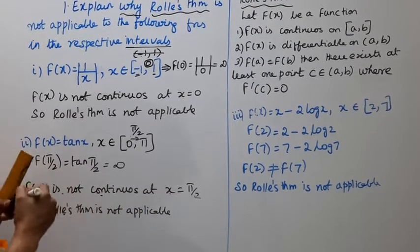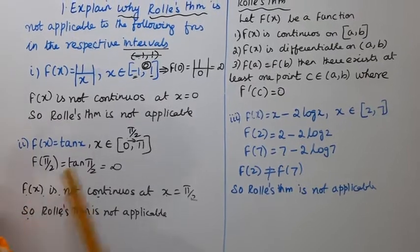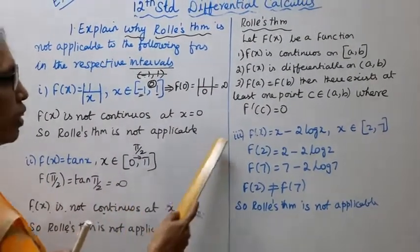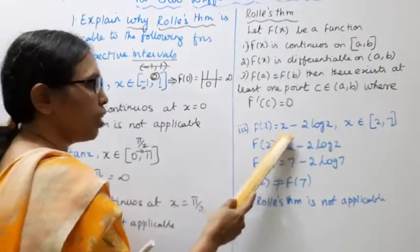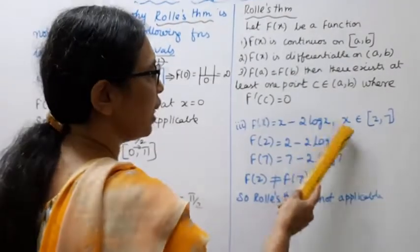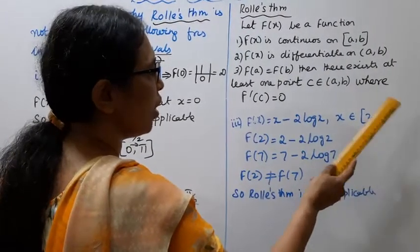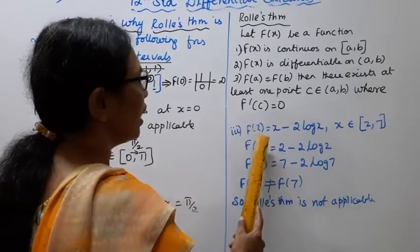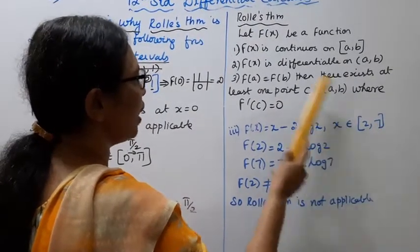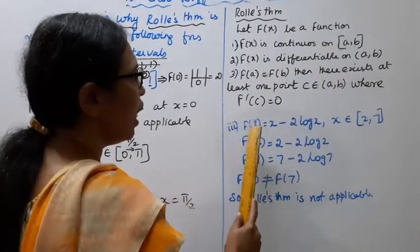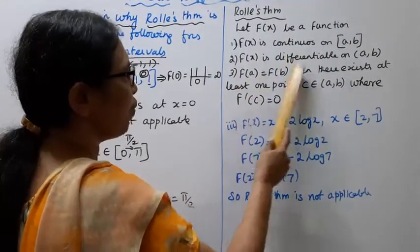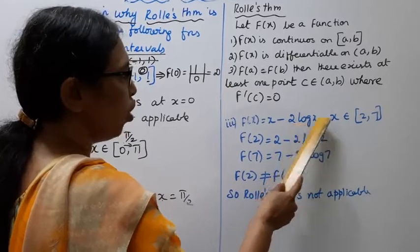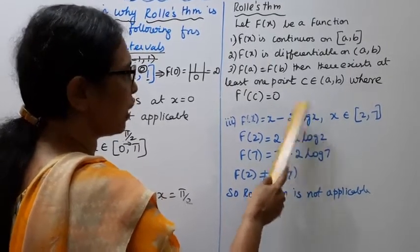Rolle's theorem is not applicable. Now the third subdivision: f(x) = x − 2 log x, x belongs to closed interval [2, 7]. f(x) is continuous. f(x) is differentiable — differentiating gives 1 − 2/x.